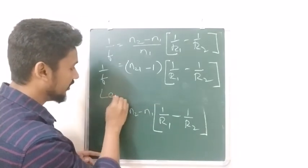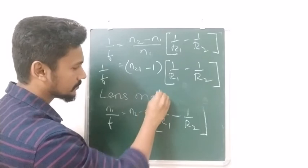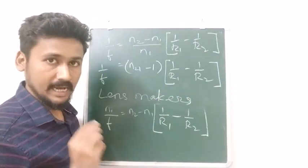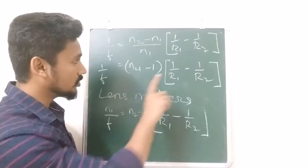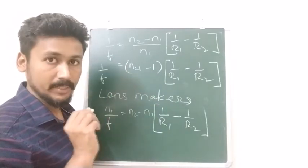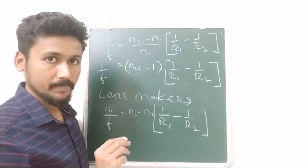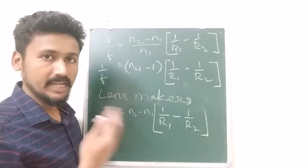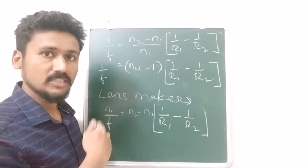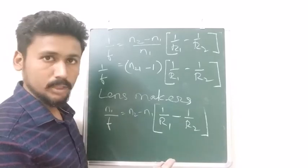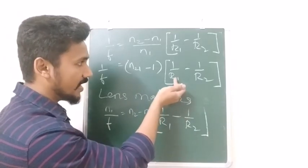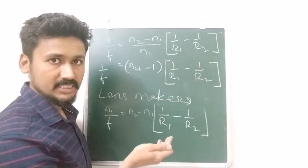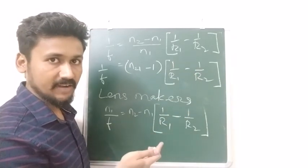The lensmaker's formula is applicable for all types of lenses — convex and concave. For a concave lens, R1 becomes negative and R2 becomes positive, which gives a negative focal length. This derivation could be asked in the exam, so make sure you understand it properly.